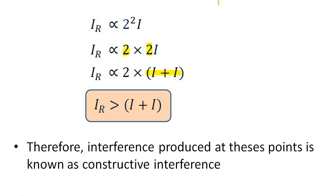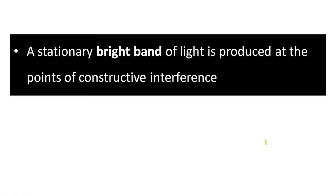Initially, the first wave has an intensity I and the second wave has an intensity I. When these waves superpose, the resultant wave has an intensity which is higher than the sum of the individual intensities. So we call this interference constructive interference. A stationary bright band of light is produced at the points of constructive interference.